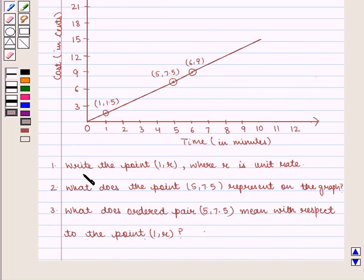First, write the point (1, R) where R is unit rate. Second, what does the point (5, 7.5) represent on the graph?